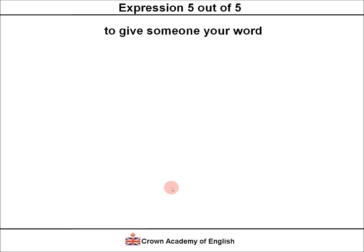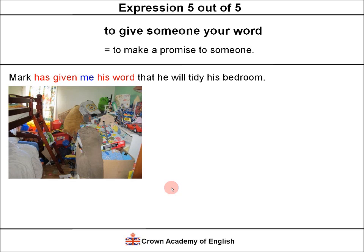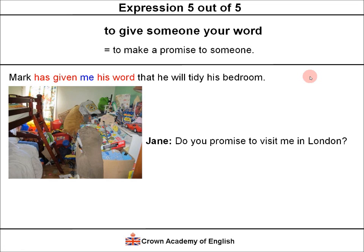Expression five: to give someone your word. This means to make a promise to someone. Example: Mark has given me his word that he will tidy his bedroom — present perfect using the past participle, has given. Jane asks, 'Do you promise to visit me in London?' Mark replies, 'Yes. I give you my word.' — meaning yes, I promise.